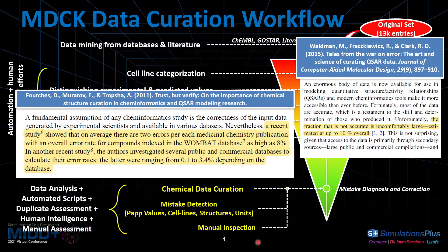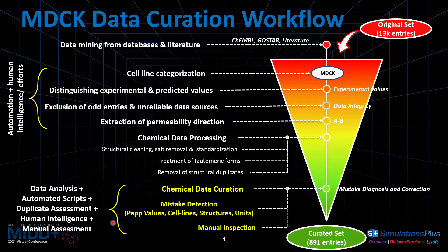This is done with a combination of methods including data analysis, automated scripts, duplicate assessment, human intelligence, and manual assessment. At the end of the entire pipeline, after doing a whole lot of chemical data curation, we ended up with about 891 entries. This is the final curated dataset for the MDCK cell line.